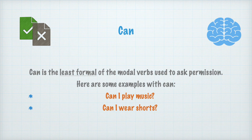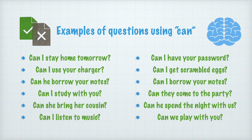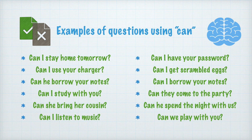Can. Can is the least formal of the modal verbs used to ask for permission. Can es el verbo modal menos formal que se usa para pedir permiso. Here are some examples with can. Aquí hay algunos ejemplos con can. Can I play music? ¿Puedo tocar música? Can I wear shorts? ¿Puedo usar pantalones cortos? Examples of questions using can — ejemplos de preguntas usando can: Can I stay home tomorrow? ¿Me puedo quedar en la casa mañana? Can I use your charger? ¿Puedo usar tu cargador? Can he borrow your notes? ¿Puede él tomar tus notas prestadas? Can I study with you? ¿Puedo estudiar con ustedes? Can she bring her cousin? ¿Puede ella traer a su primo? Can I listen to music? ¿Puedo oír música?